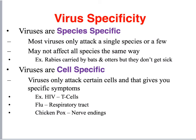Viruses are very specific. For example, bats and otters both carry the rabies virus, but neither are affected by it — they are just a host. They have it, they carry it, but they don't get sick. They are also very cell-specific: HIV will only infect immune system cells like T-cells, flu only infects respiratory cells in the respiratory tract, and chickenpox will only infect nerve-ending cells.